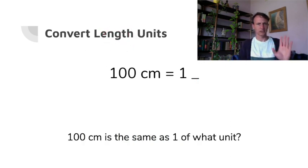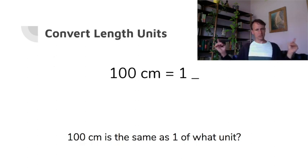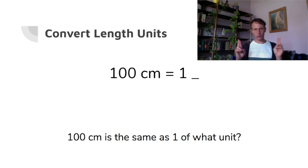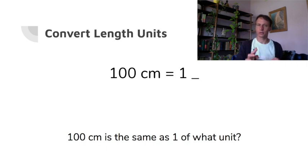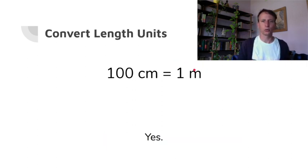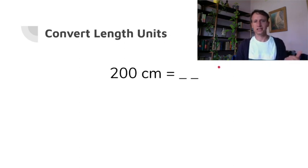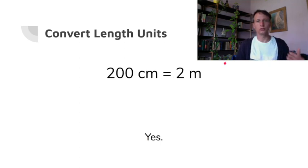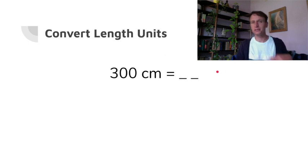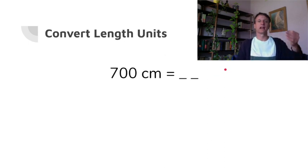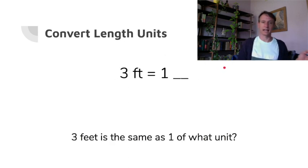Now we're doing centimeters. Picture that meter stick again — that's one meter containing 100 centimeters, just as one dollar contains 100 cents. So 200 centimeters equals two meters, 300 centimeters equals three meters, and 700 centimeters equals seven meters.